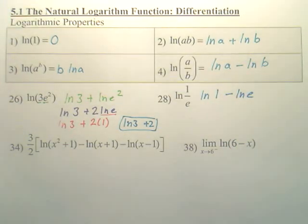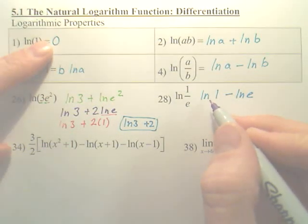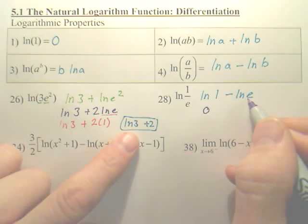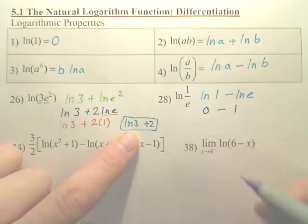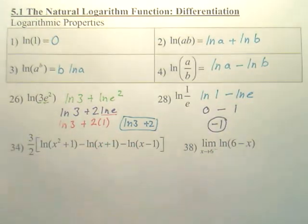Okay, from there, do we know what ln 1 is? ln 1 is zero, and I said ln e is one. So zero minus one is negative one.